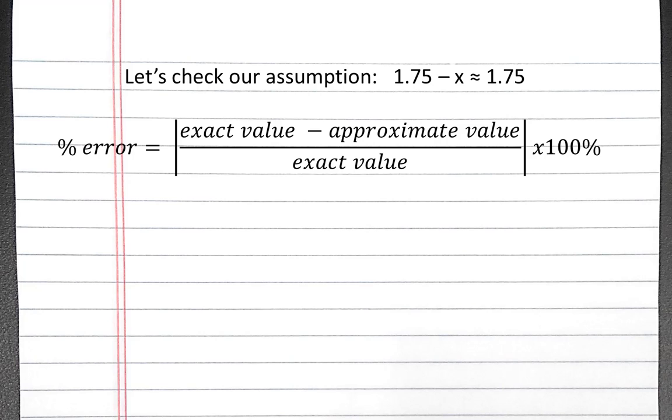So to calculate our percent error, we can take our exact value, which is 1.75 minus x, subtract our approximate value, which is 1.75, divided by our exact value. If we take the absolute value of that times 100, we have our percent error.